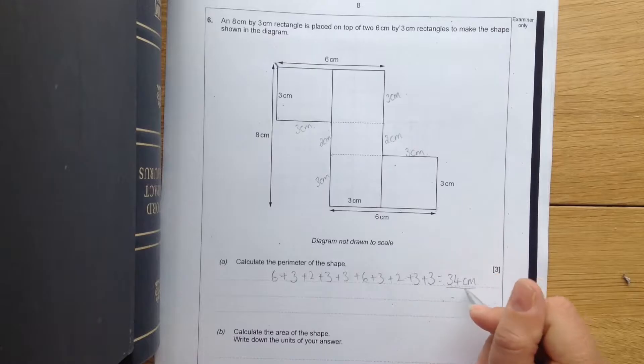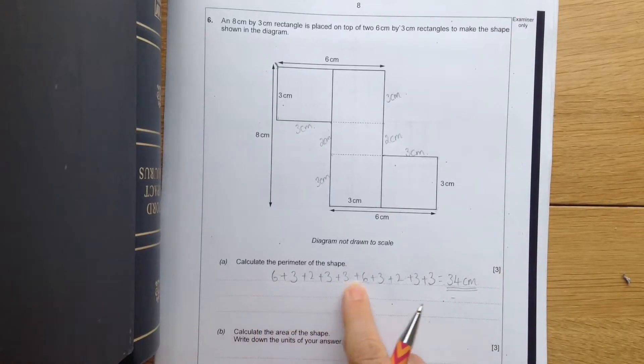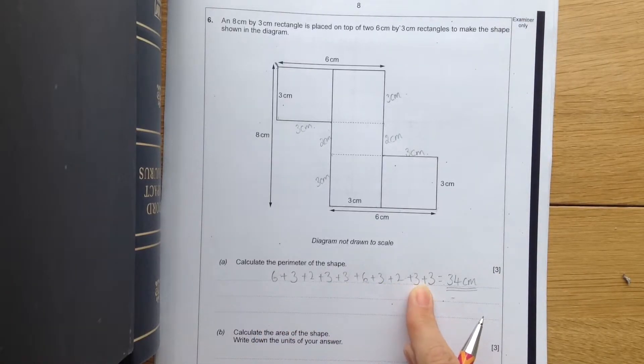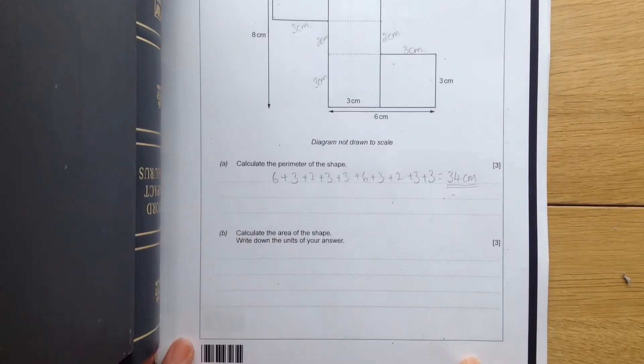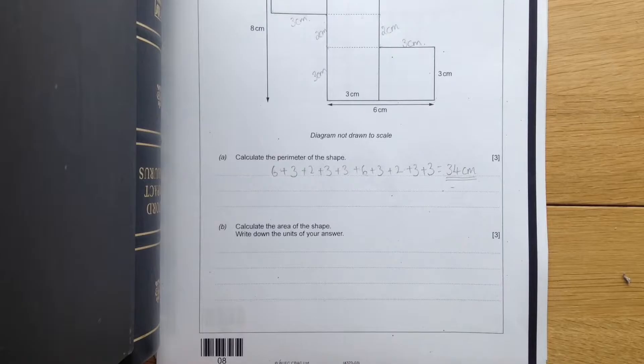34 centimeters. And I strongly suggest that you always check this addition twice, because they're easy marks. You don't want to make careless errors. Calculate the area of the shape. Write down the units of your answer.